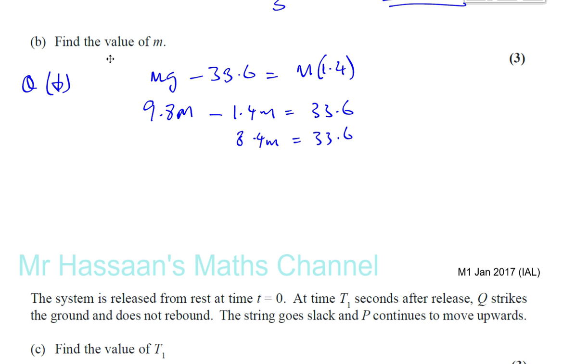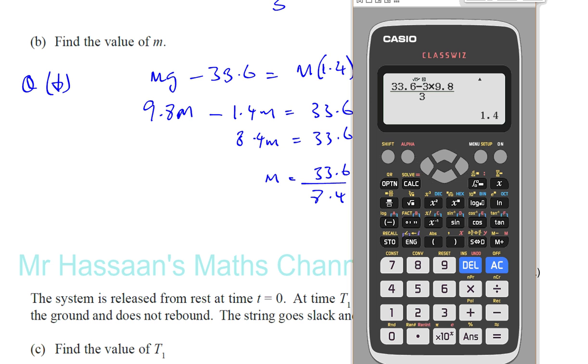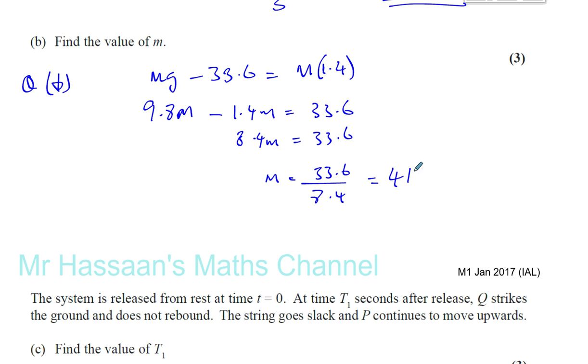We can say M is 33.6 divided by 8.4. So 33.6 divided by 8.4, that's 4. So M is equal to 4 kg.